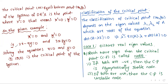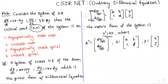Substituting dx/dt = 0 and dy/dt = 0 into the given differential equations gives 2x - 7y = 0 and 3x - 8y = 0. Solving these two equations, we get x = 0 and y = 0. Therefore, (0, 0) is the critical point of the system, as already given in the problem.